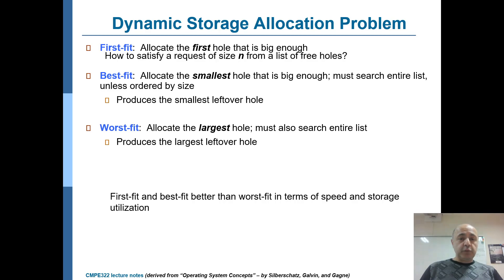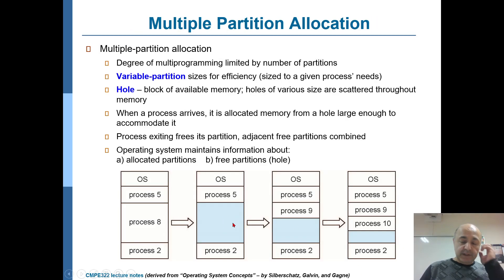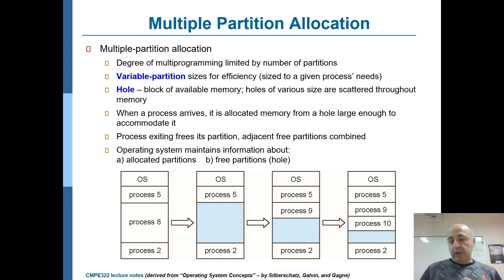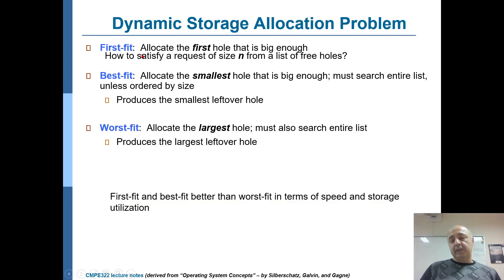The first question that comes to mind is: if there are multiple holes — say process 5 also completes, leaving another hole — and process 11 can fit into one of them, which hole should we select? One solution is first fit: just find the first hole in which the new process can fit — that's good enough. It's a very simple algorithm.